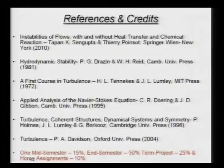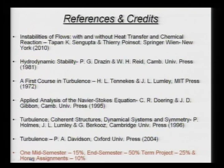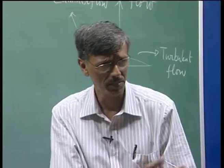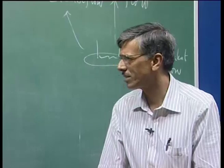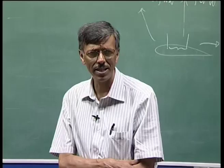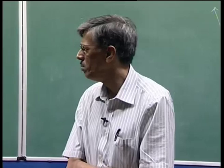In the turbulent flow part, we have a very nice book — A First Course in Turbulence by Tennekes and Lumley — which we would use in bits and pieces. For understanding the morphology of turbulent flow, we would also look at Applied Analysis of the Navier-Stokes Equations by Doering and Gibbon — a very short monograph but a very nice book. Since we like to study flow as a dynamical system, that is covered very nicely in the book titled Turbulence, Coherent Structures, Dynamical Systems and Symmetry by Holmes, Lumley, and Berkooz.